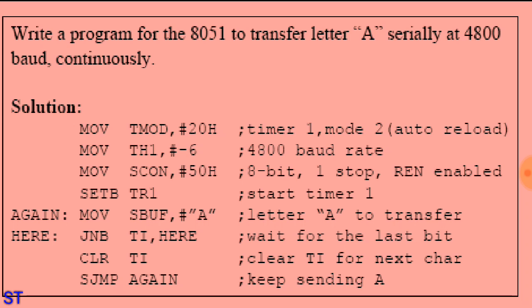MOV TH1, #FDH sets the 4800 baud rate. MOV SCON, #50H configures serial Mode 1 with 8-bit data, one stop bit, and the receiver enabled. Then SETB TR1 starts Timer 1.